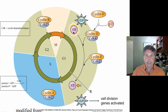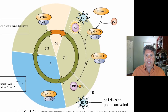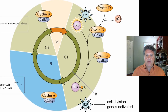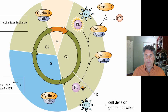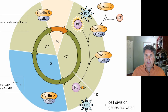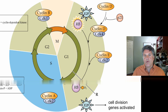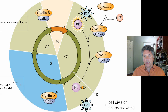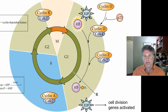The retinoblastoma protein is active when it is unphosphorylated. When it becomes phosphorylated — has a phosphate group attached to it — it is inactive. In its active form it binds a transcription factor called E2F. E2F is a transcription factor that when free will initiate further cell division and move the cell past the restriction point and into S phase by activating genes required to do so. When retinoblastoma protein is active, it sequesters — it binds E2F — and in that way inhibits the activity of E2F.